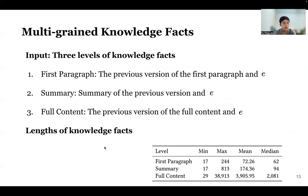For the multi-grade knowledge facts, the knowledge facts exist at three levels: the first paragraph, the summary, and the full content. To feed the knowledge facts as input, we concatenate a label with the news trigger event E. The model then learns from both the knowledge facts and the news trigger events to generate appropriate content.